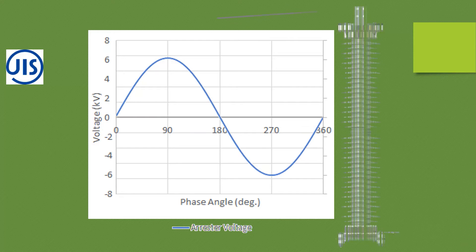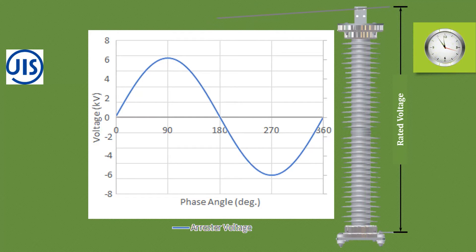In GIS standard, rated voltage is defined as voltage applied across the arrestor terminal for a predetermined duration while performing a standard operation duty.